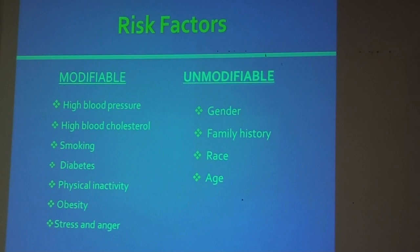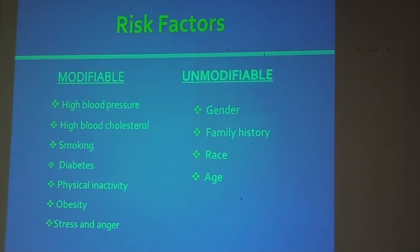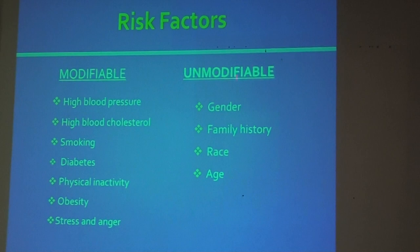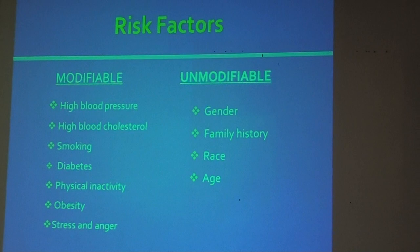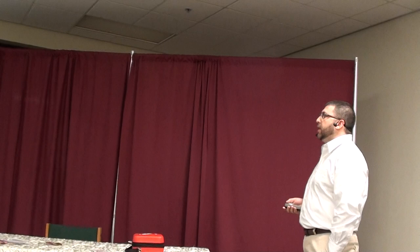To prevent atherosclerosis and coronary artery disease, we need to understand the risk factors. There are modifiable and unmodifiable risk factors. Unmodifiable risk factors — those we cannot control — include gender (males are more likely to have atherosclerosis), family history, race (African Americans are more prone to high blood pressure, Mexicans to diabetes), and age. The older we get, the more likely we are to develop cardiovascular disease.